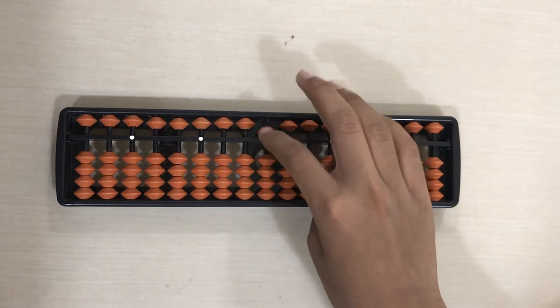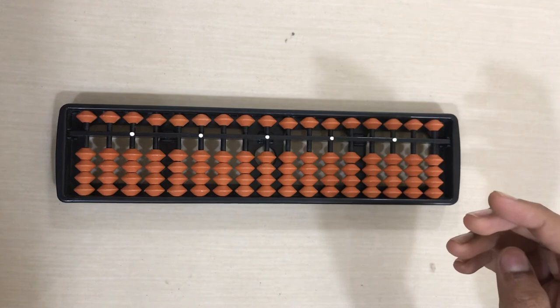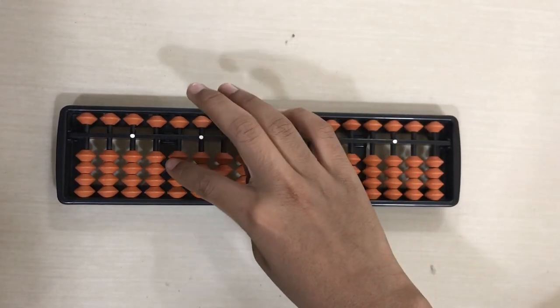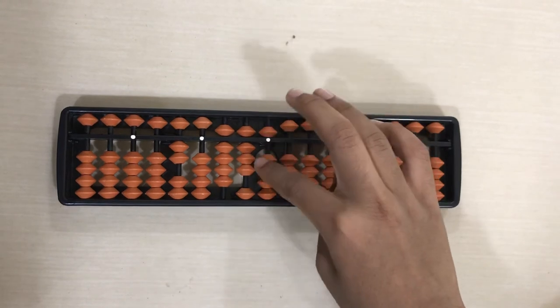Another example I can give is twenty thousand, nine hundred and eighty-seven. Twenty thousand, nine hundred and eighty-seven.